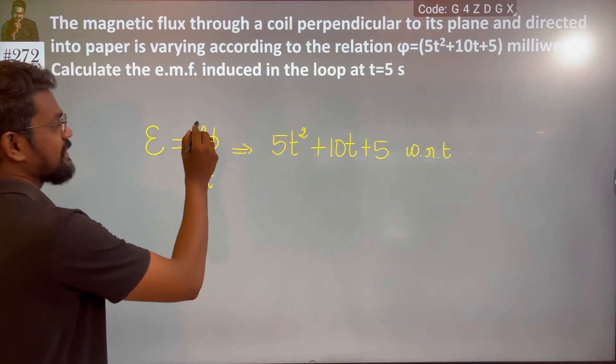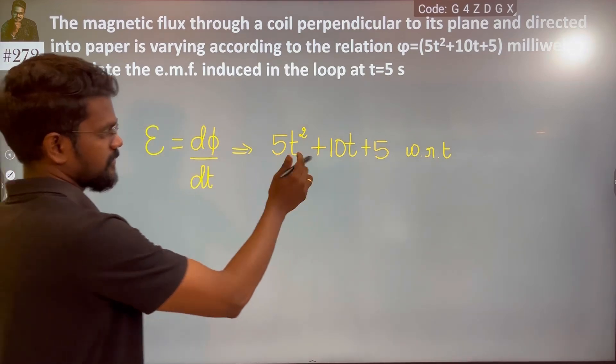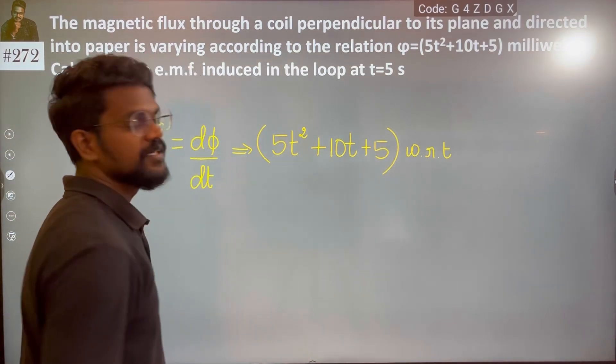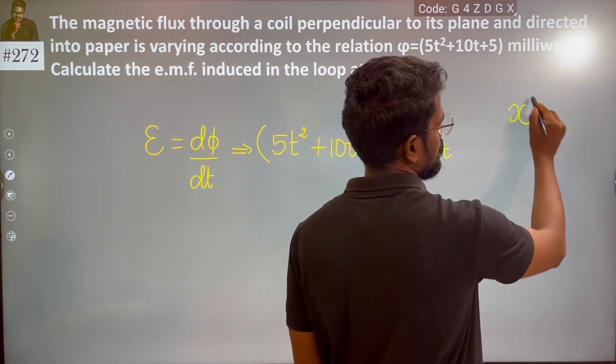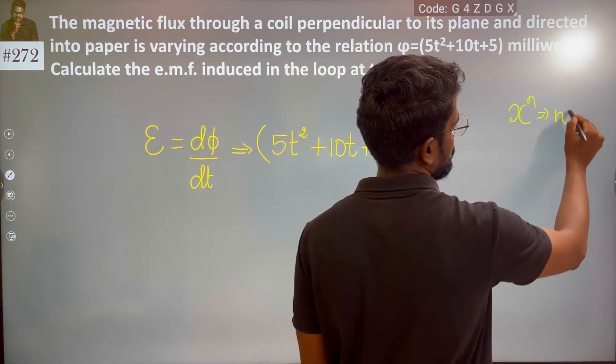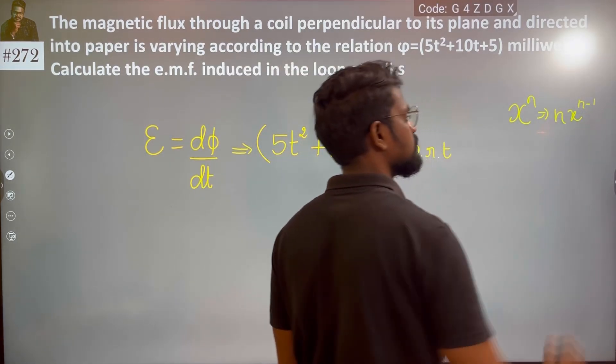So I am going to differentiate. This is 5. We don't differentiate the constant. So to differentiate, we know x to the power n, then n times x to the power n minus 1. So I am going to differentiate.